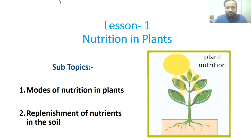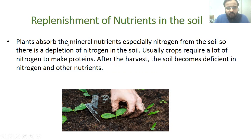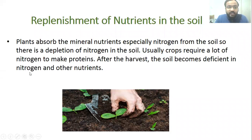Our first topic for today is replenishment of nutrients in the soil. We know that plants obtain the majority of their nutrients from the soil, due to which soil becomes deficient in nutrients. Plants absorb mineral nutrients, especially nitrogen, from the soil. Nitrogen is required to make protein. Usually crops require a lot of nitrogen to make proteins, and after the harvest, the soil becomes deficient in nitrogen and other nutrients.